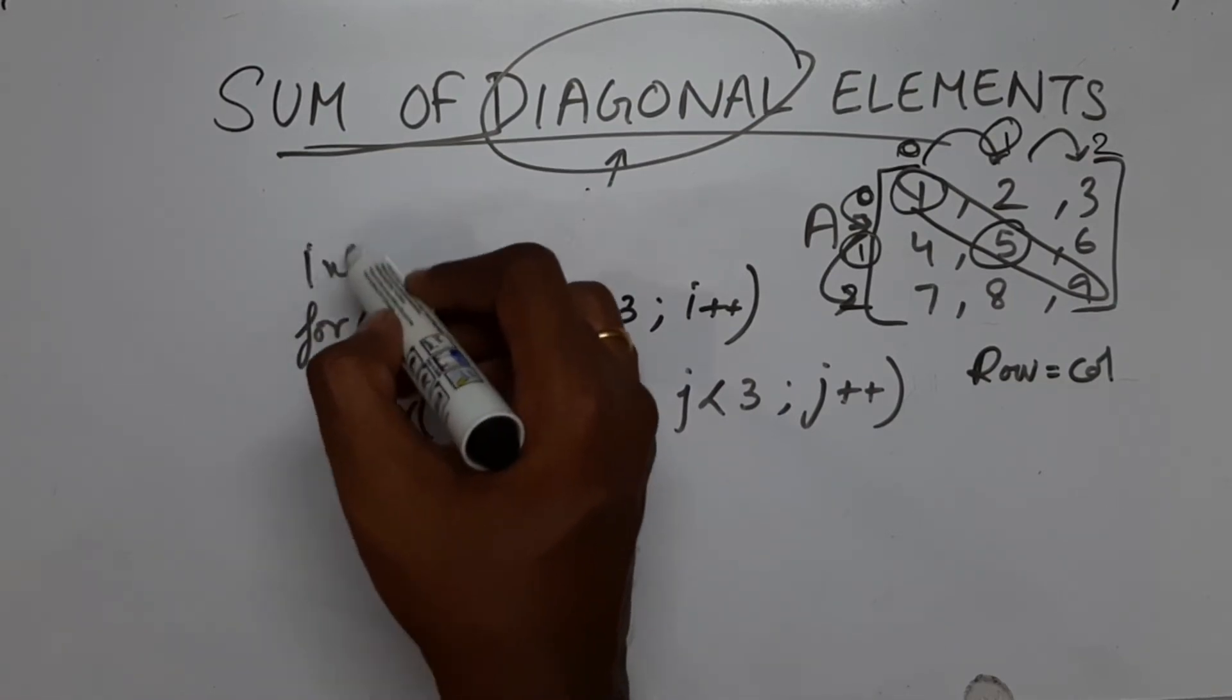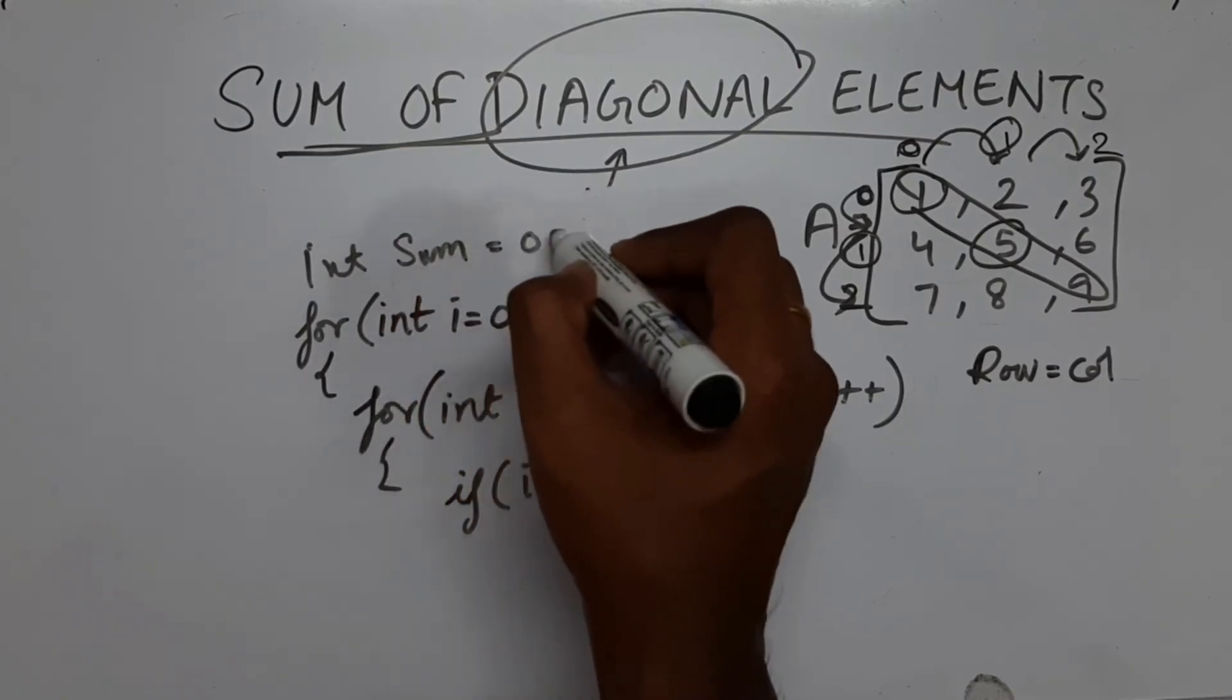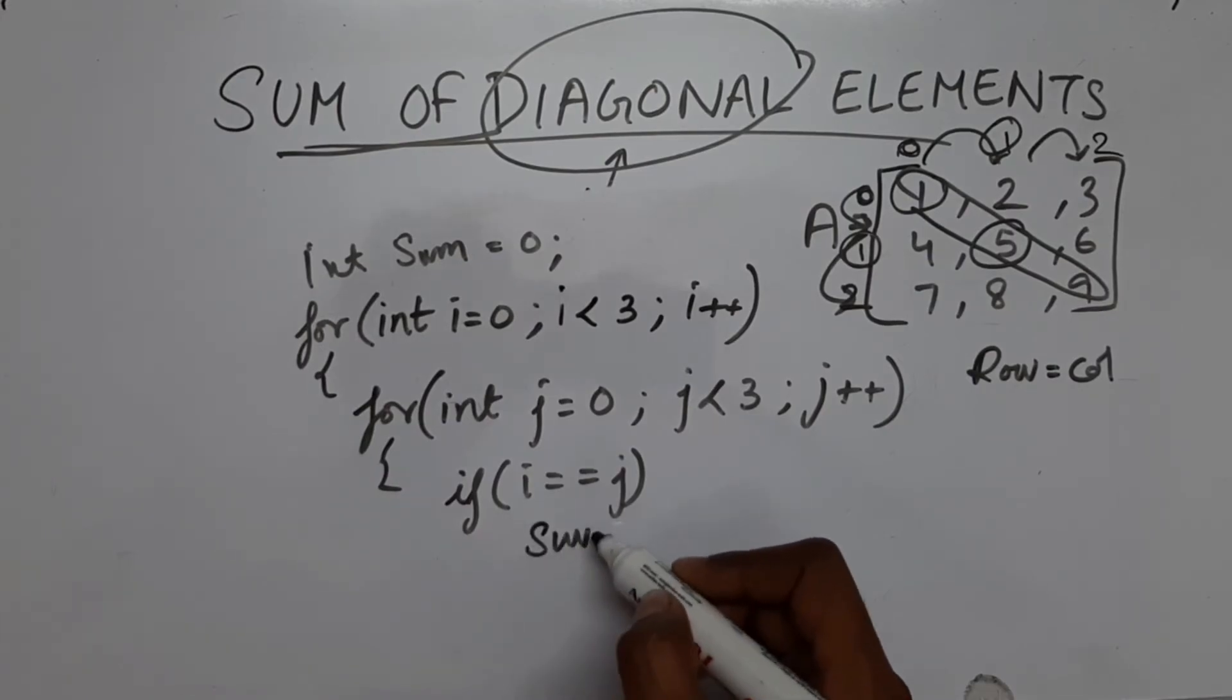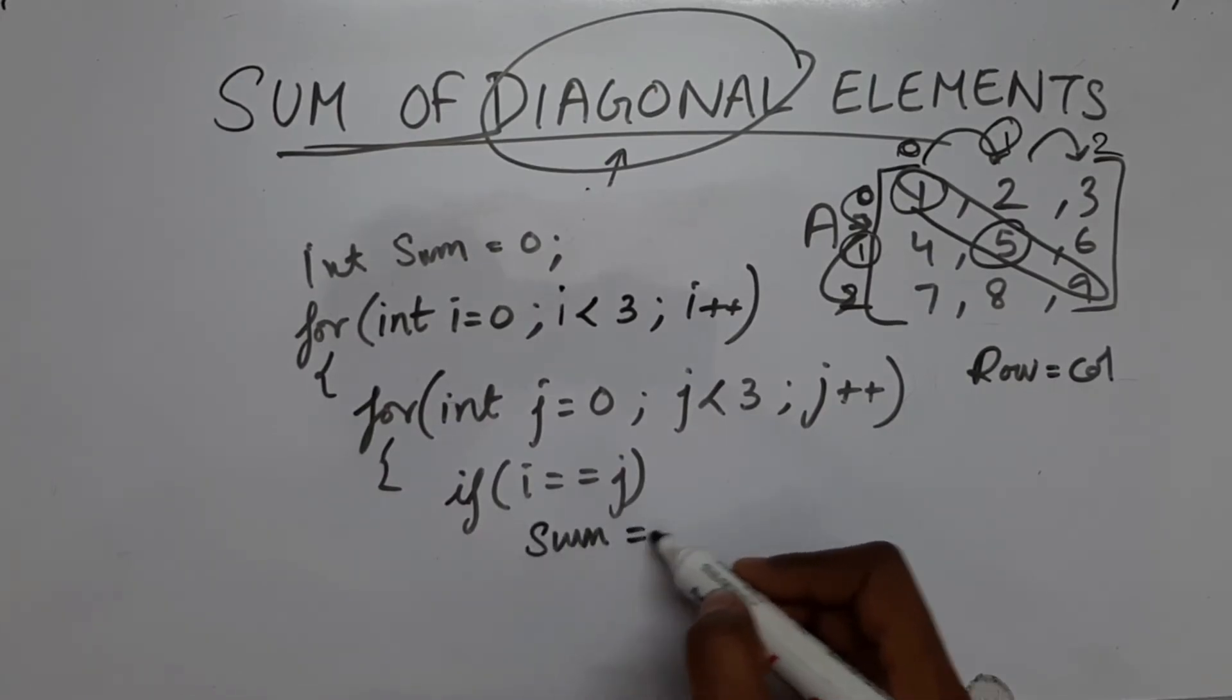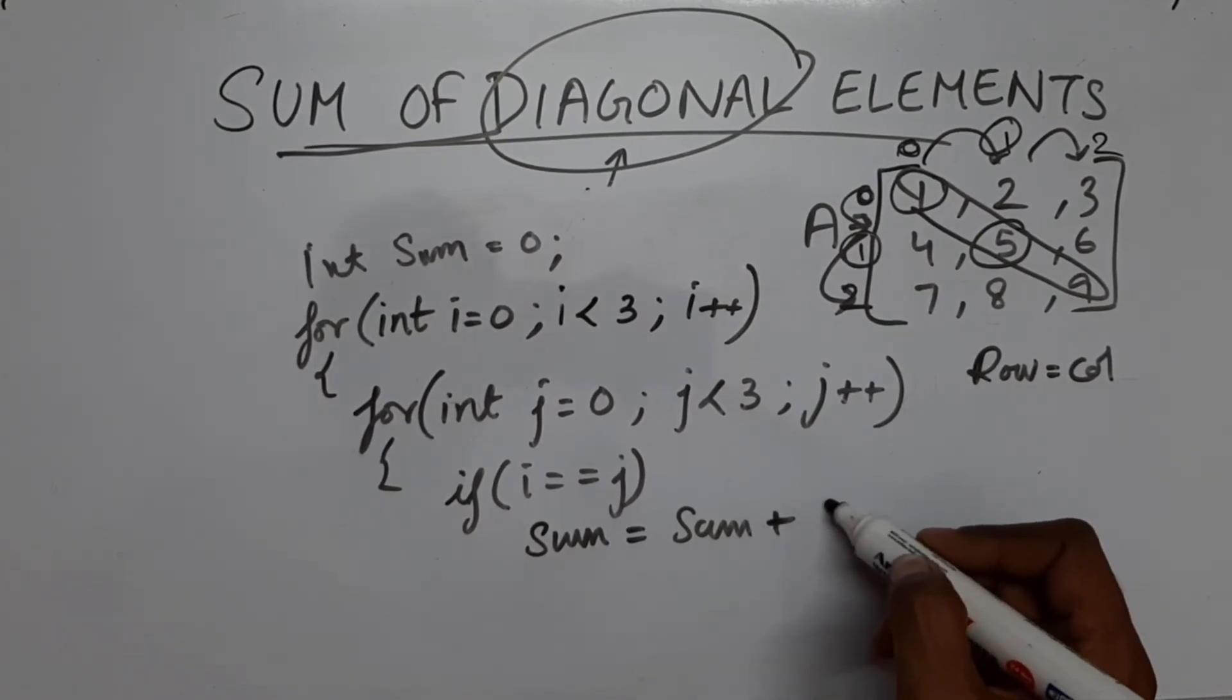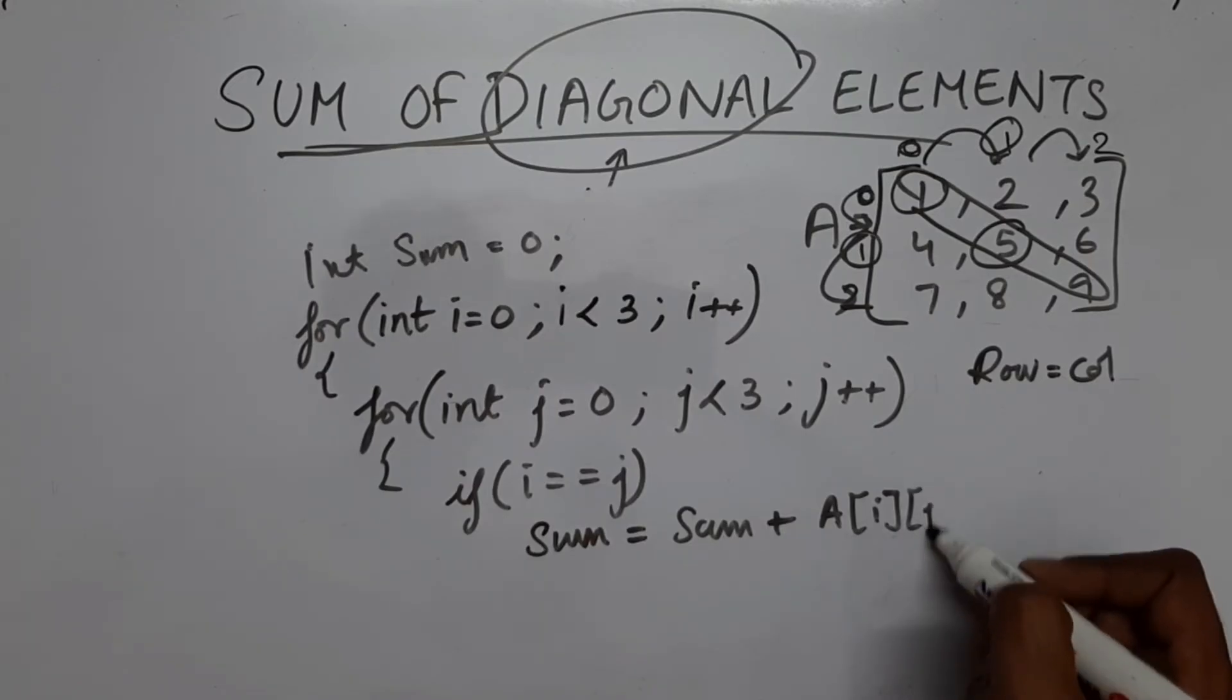let me declare one more variable for sum. So I will say if i equal equal j, sum equal to sum plus the value present in i and j.